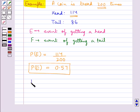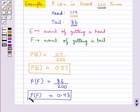Now probability of getting a tail is given by P(F). This is equal to number of tails coming up, and that is 86, upon the total number of trials, that is 200, which is equal to 0.43. So probability of getting a tail is 0.43.